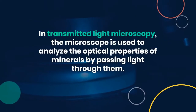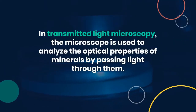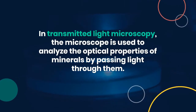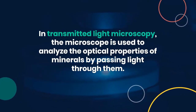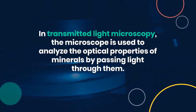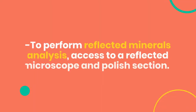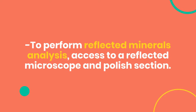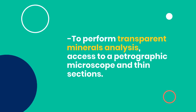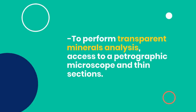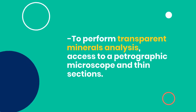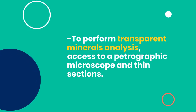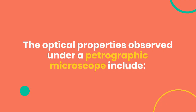In transmitted light microscopy, the microscope is used to analyze the optical properties of minerals by passing light through them. To perform reflected minerals analysis, access to a reflected microscope and polished section is required. To perform transparent minerals analysis, access to a petrographic microscope and thin sections is required.